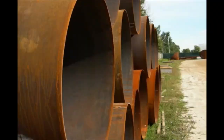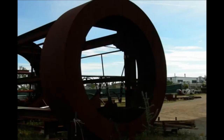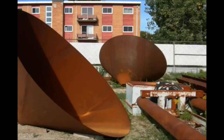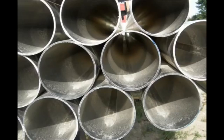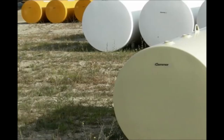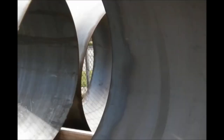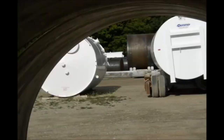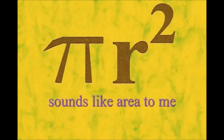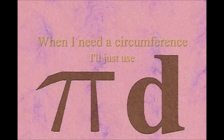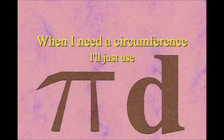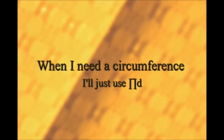Here is a circle, it knows how to get around. It has a radius from center to rim. And its diameter's a line that goes from side to side while passing through the center, now isn't that simple. Pi r squared sounds like area to me, when I need a circumference, I'll just use pi d.